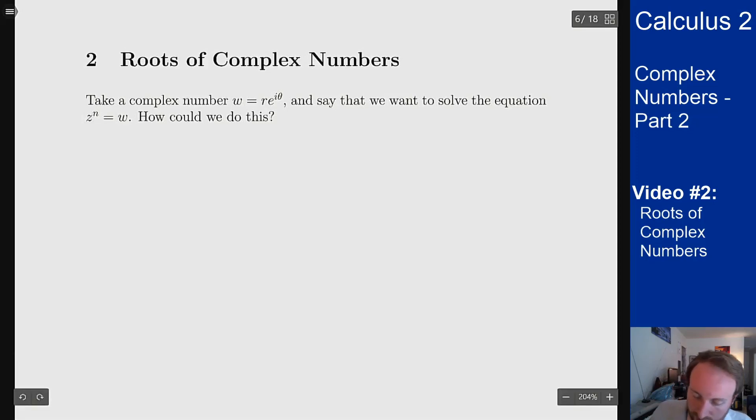So I know w is of the form r e to the i theta. I want to find the complex numbers that satisfy z to the n equals w. How could we do this? Well let's start by saying we know what z has to look like in polar form and see what that tells us.